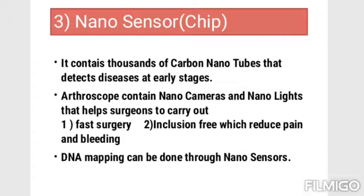The third application is nanosensors, which is a chip containing thousands of carbon nanotubes (CNT) that detect disease at early stages. Arthroscopes are devices containing nano cameras and nano lights that help surgeons carry out surgery more quickly, enabling minimally invasive surgery with reduced pain and bleeding. DNA mapping can also be performed through these nanosensors.